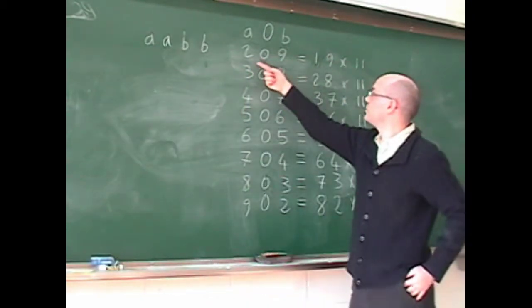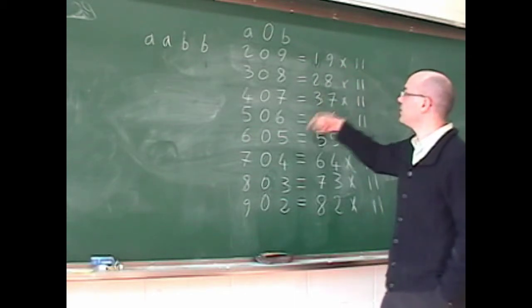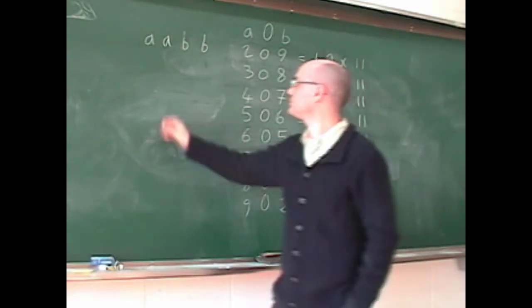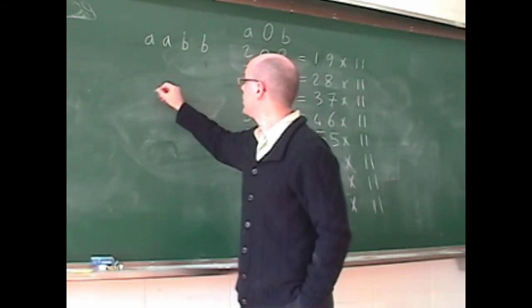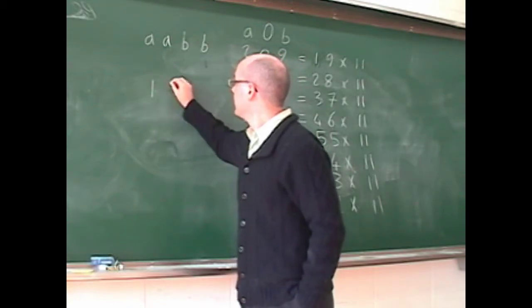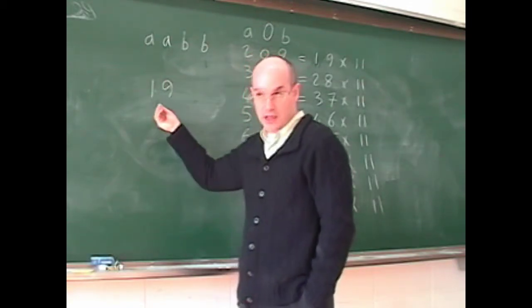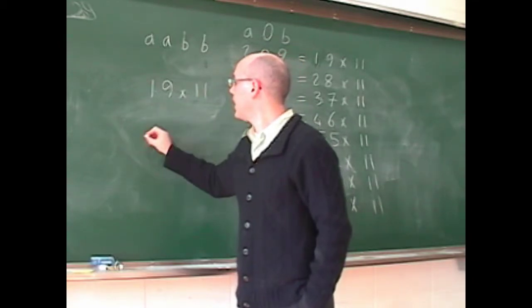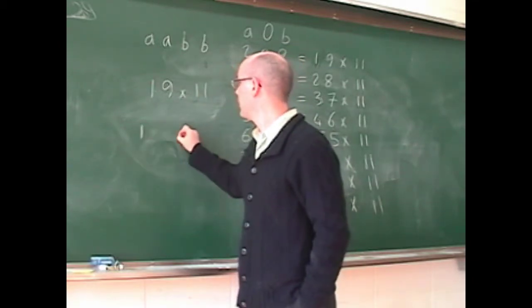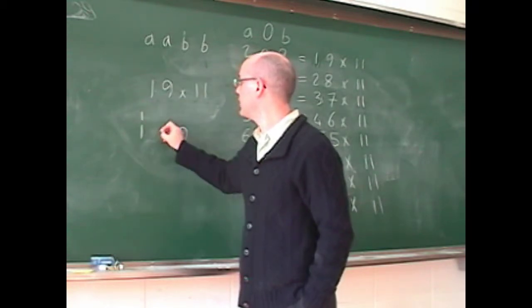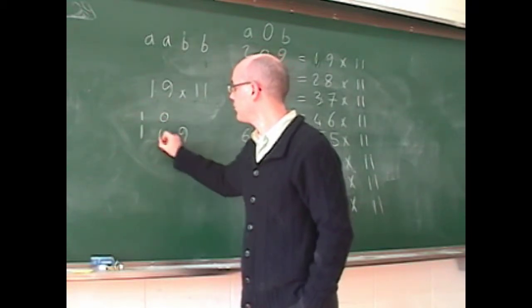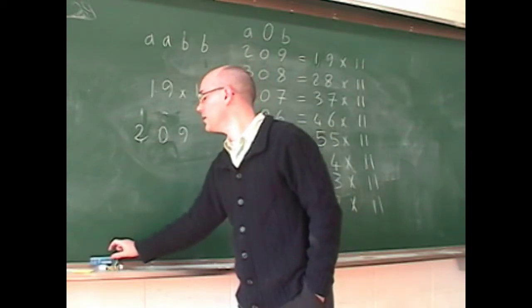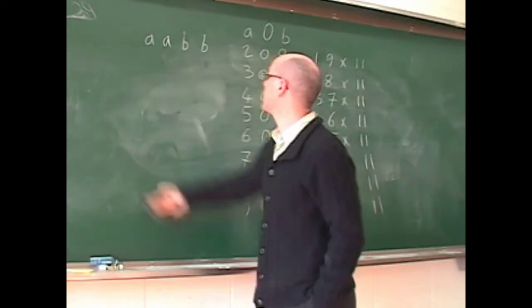So we have the list here: 209 is 19 by 11. For 19, you have to add up those two numbers to multiply it by 11, but when you add 9 and 1, you have 10. Actually the way it works, you have the 1 and 9, and 1 by 1 makes 2, and that's why you have 209. That's why the 1 disappeared and changed into a 2.